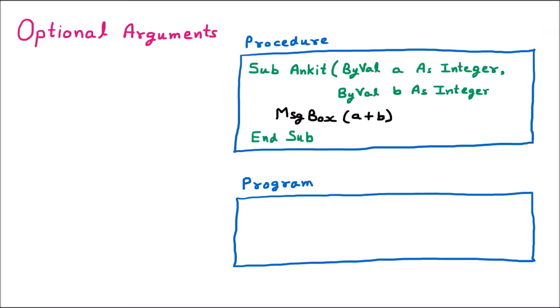We are learning optional arguments. To understand them, we take an example where we have defined a procedure. There is a Sub — meaning no return type — named Ankit. We have passed two parameters: ByVal a as integer and ByVal b as integer. Inside, we are simply showing a message box with the sum of the two arguments, a plus b, and the procedure ends with End Sub.